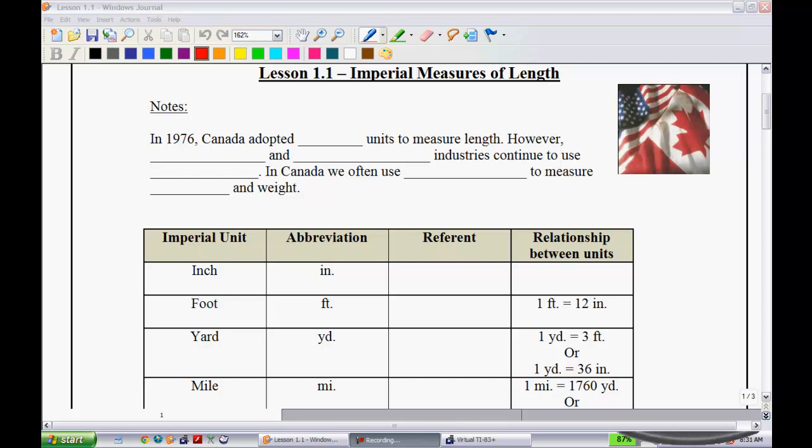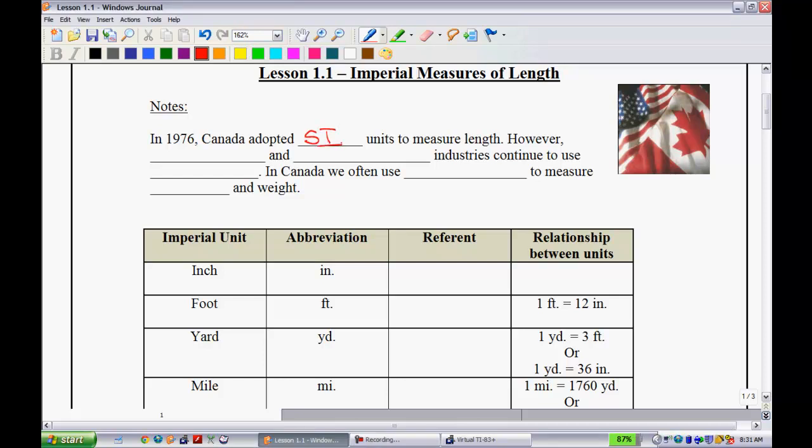In 1976, Canada adopted SI units to measure length. SI units, it stands for System International. It's commonly referred to as metric. So when you see SI, we're really thinking metric, or what we normally use here in Canada: centimeters, meters, kilometers, and so on.